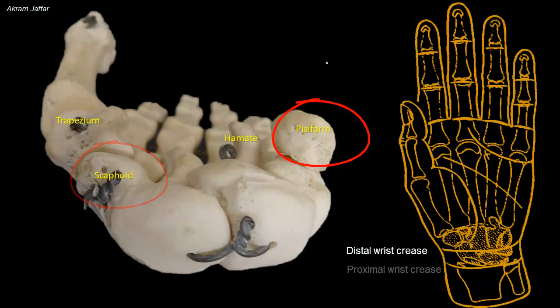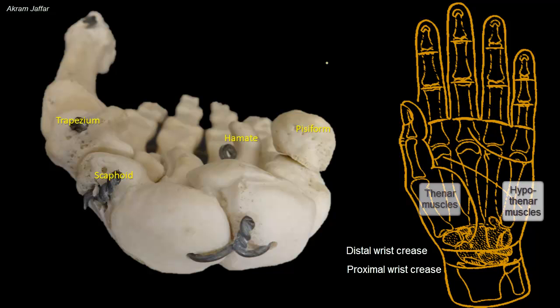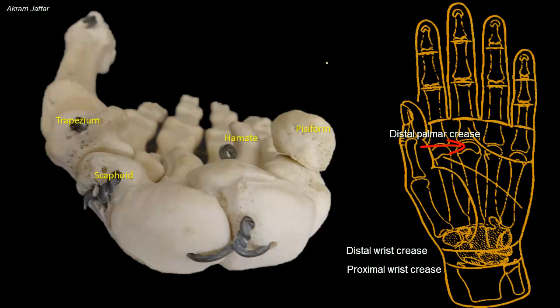The proximal wrist crease is located at the level of the wrist joint. The ridge of the trapezium and hook of the hamate lie distal to the scaphoid and pisiform respectively. They are more difficult to palpate since they are covered by the muscles of the thenar and hypothenar eminences. Also note that the heads of the metacarpals lie level with the distal palmar crease.